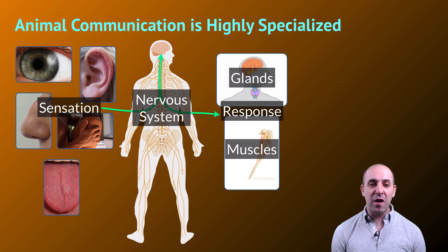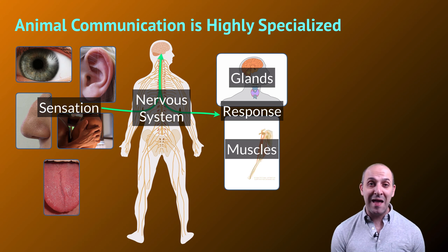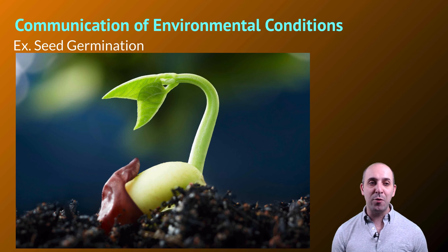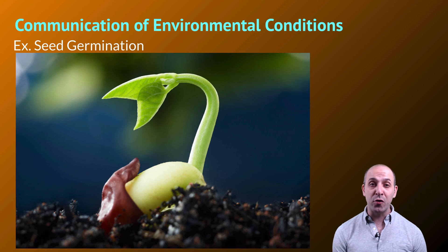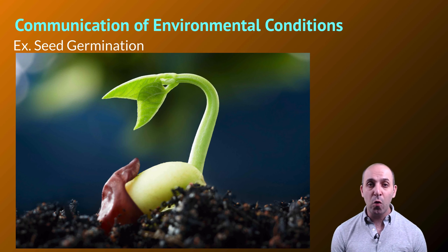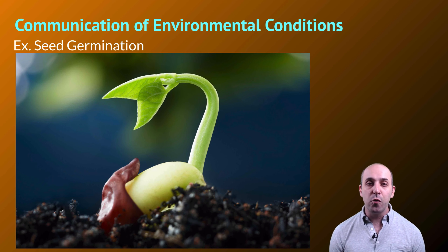Of course, that doesn't mean other lineages of life do not communicate. All lineages of life can communicate information both from other organisms and from the environment. Let's look at a non-animal example: the communication of information from the environment, specifically seed germination. It's incredibly important for the seeds of a plant to germinate when environmental conditions are correct, so the seed needs to be able to receive information about those conditions. Seeds do not have sensory systems — they can't see what's going on — so this information is conveyed through chemical systems.